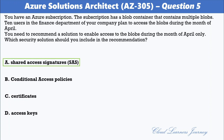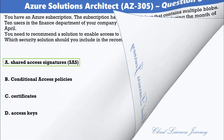The correct option is A — Shared Access Signature. To enable access to blobs in a container during the month of April only, use a Shared Access Signature. SAS tokens can be generated with an expiration time and scoped to provide granular access control. They can easily be distributed to the 10 finance department users, and will no longer be valid once they expire.